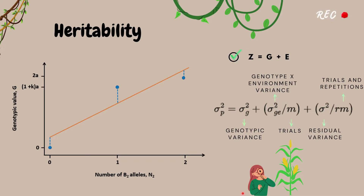The phenotypic variance is related to the variance of a genotype obtained in M trials or environments and replicate B trial. Thus, the phenotypic variance can be calculated from the genotypic variance, plus the ratio between the variation of the genotype-by-environment interaction and the number of trials, plus the ratio between the residual variance and the product of the number of trials and repetitions. When we divide the genotypic variance by the phenotypic variance, we are algebraically estimating how much of the phenotypic variation is due to genetic components. This coefficient we call heritability, which in general indicates how heritable a particular trait is.